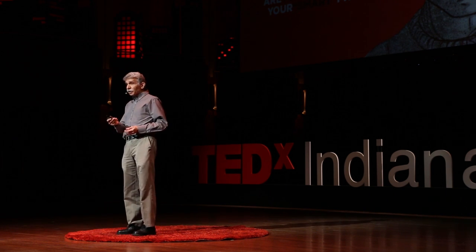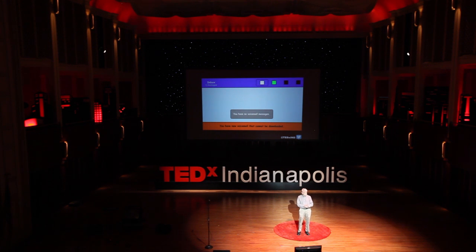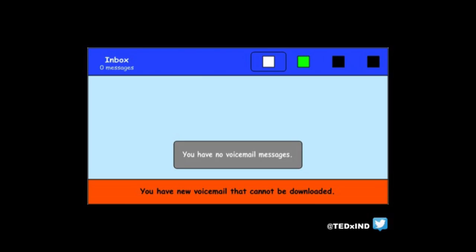I'd like to give you some examples of bad design. This I saw on my cell phone — I'm assuming most of you have cell phones, maybe one that looks like this. It says: inbox zero messages, you have no voicemail messages — no surprise there — you have new voicemail that cannot be downloaded. What's up with that? I reproduced this on my graphics program, and I didn't try to reproduce the icons along the top, partly because it's hard, and also — does anybody know what those icons mean on your cell phone? I sure don't.